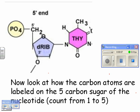So here's a nucleotide, and I want you to look at the sugar part, the ribose. Notice the carbon atoms are labeled on the 5-carbon sugar of the nucleotide. So you can see these numbers. Here's how you label them. This is number one.